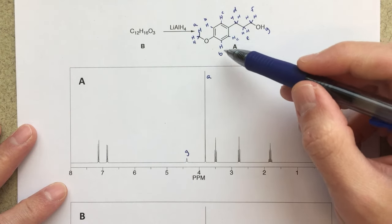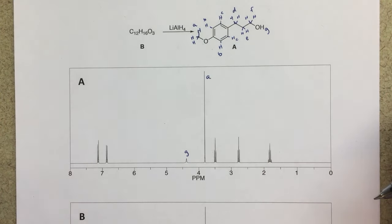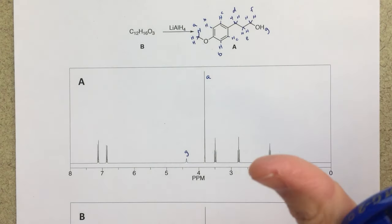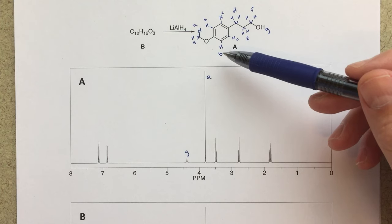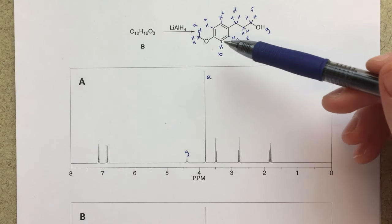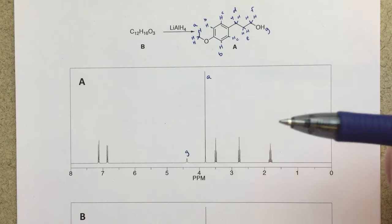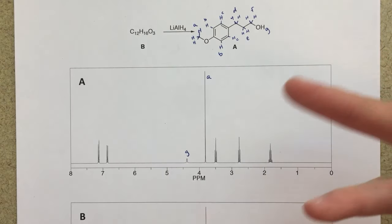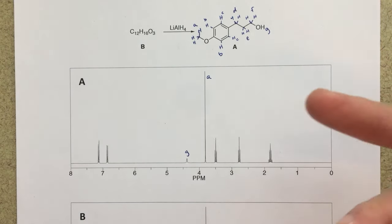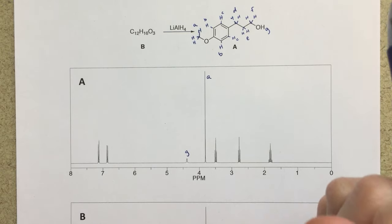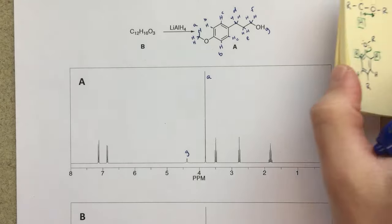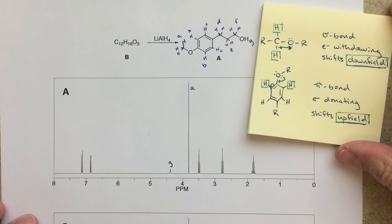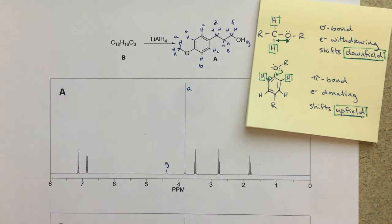Now for these aromatic peaks, B and C, I talked about this in a different video, but this is a very common mistake that people are going to make, and you might think that B should be shifted downfield because of the proximity to this oxygen.